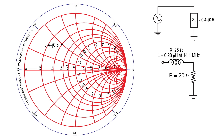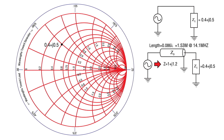The first example has a normalized load impedance of Z equals 0.4 plus J 0.5. Remember the normalized impedance is the actual impedance divided by 50. At 14.1 MHz, the actual impedance would be a resistance of 20 ohms in series with an inductor of 0.28 microhenries. One way to move to the R equals 1 circle is to move on a constant arc representing a standing wave ratio of 3.2, which means inserting a transmission line 0.086 wavelengths long in series with the load impedance. At 14.1 MHz, this will be 1.53 meters of Belden 9913 RG8 coaxial cable with a velocity factor of 0.84.